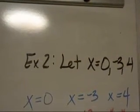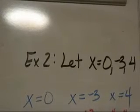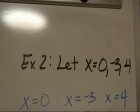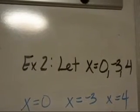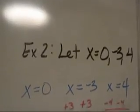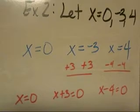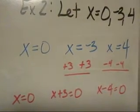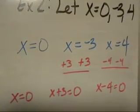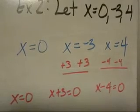Set up each of those individual equations. x equals 0 is already solved. But to get rid of a negative 3, I will add 3. And to get rid of a positive 4, we will subtract 4. So now we have the three equations: x equals 0, x plus 3 equals 0, and x minus 4 equals 0.